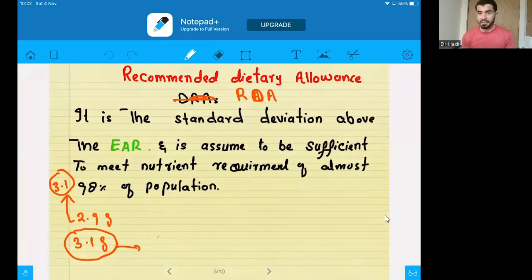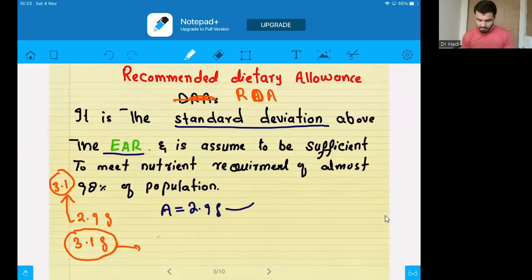Now, there is another term recommended dietary allowance, RDA. What is RDA? It is the standard deviation above the EAR. If you know EAR, what will be RDA? If we increase the value of EAR above, means 2 units above, in a standard way. Suppose, we had 2.9 gram. If we deviate from it, we can deviate as 3.3 gram, 3.0 gram, or we can deviate 2 units, 3.1 gram. If you deviate from the EAR in the upper level, not below, 2 units in a standard way, then this 3.1 gram will be called RDA, recommended dietary allowance.